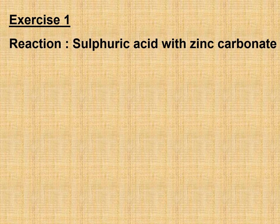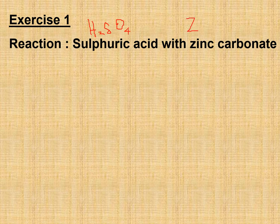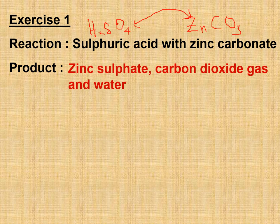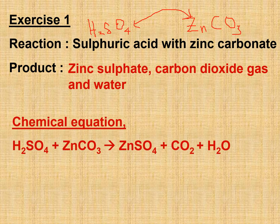Exercise: sulfuric acid (H₂SO₄) with zinc carbonate (ZnCO₃). Zinc is 2⁺ and carbonate is 2⁻, so zinc carbonate is ZnCO₃. The products are zinc sulfate, carbon dioxide gas, and water. The equation is: H₂SO₄ + ZnCO₃ → ZnSO₄ + CO₂ + H₂O. Please pause the clip to write down the chemical equation and check if it is balanced.